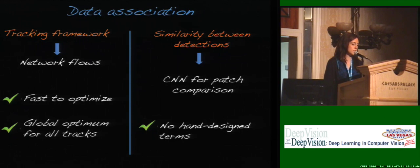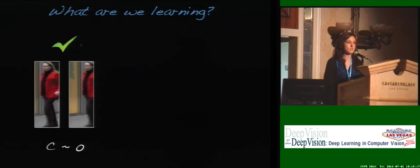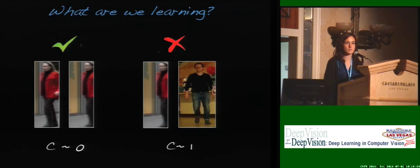What we do is measure similarity with a convolutional neural network which essentially performs patch comparison. We want the network to tell us, when given two detections in two different frames belonging to the same person, that yes, this is the same person — and no when it's actually a different person.